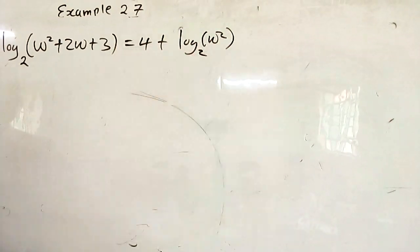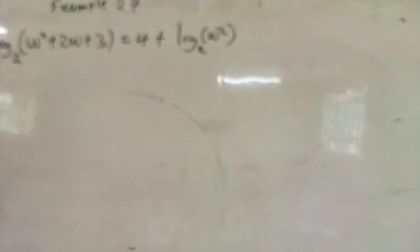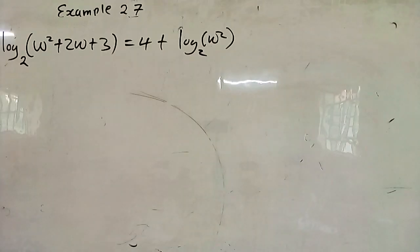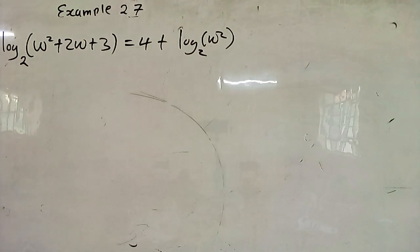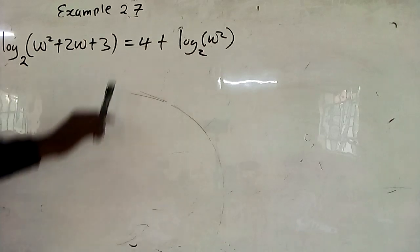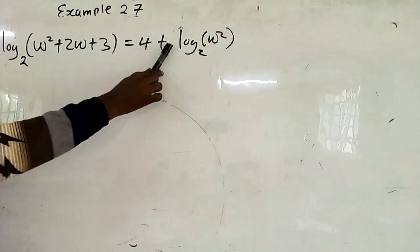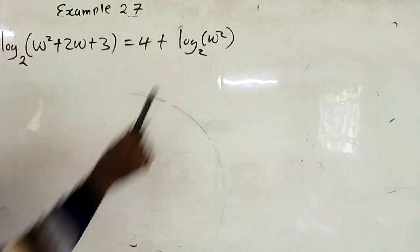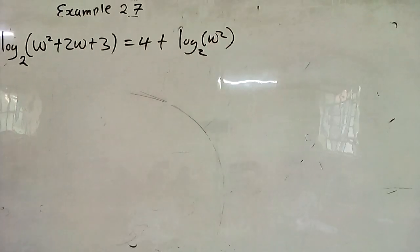You will be told to solve the following logarithmic equation: log base 2 of (w squared plus 2w plus 3) is equal to 4 plus log base 2 of w squared.